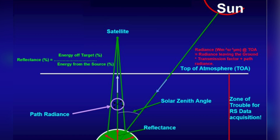Atmospheric correction is a method to try to remove the influences of that portion of light reflected off the atmosphere on the image, and preserve the part reflected off the surface. Now open QGIS software.